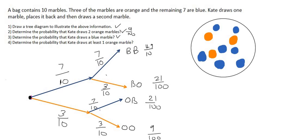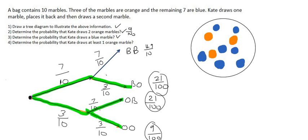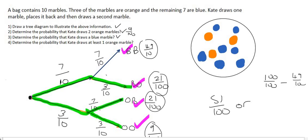Next question says determine the probability that Kate draws at least one orange. So at least one orange means one orange or more. That would be this branch, and this one, and this one. Because remember, the word at least means that or more. So once again, we could add each of these together, which would give us 51 out of a hundred. Or, because we know that these four branches should equal 100 over 100, we could just say 100 over 100 minus this one over here, and that also gives us 51 over 100. So whichever way is best for you.